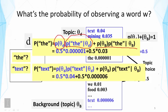The probability of the word 'text' is similar — we also consider two ways of generating it, and in each case it's a product of the probability of choosing a particular word distribution multiplied by the probability of observing the word from that distribution. To summarize, the probability of a word from a mixture model is in general a sum over different ways of generating the word, and in each case it's a product of the probability of selecting that component model multiplied by the probability of actually observing the data point from that component model. This is something quite general and you will see it occurring often later.